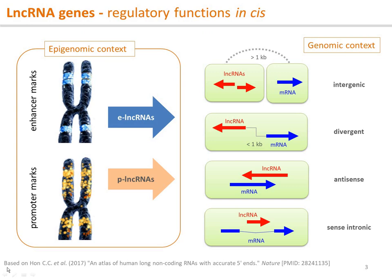On the top level, based on our 2017 Nature paper, lncRNAs are classified into lncRNAs made from enhancer regions, or e-lncRNAs, or from promoters as p-lncRNAs, in the epigenetic context. They are further classified in the genomic context with the closest protein-coding gene as intergenic, divergent, antisense, or sense intronic, or by analysis of the potential cis-regulatory target genes.